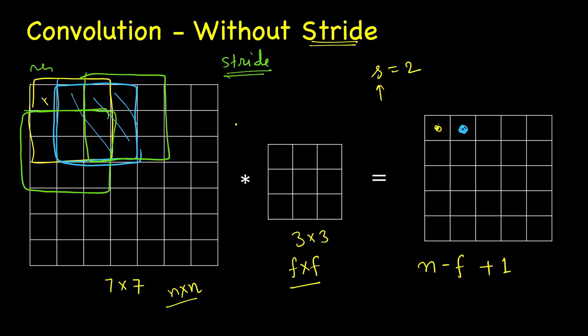And if we add padding by p on each side, then this n changes. So instead of n cross n we have now n plus 2p on one side and n plus 2p on the other side.